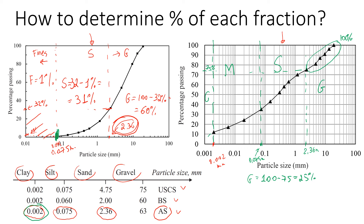For sand, it starts from 75 percent finer and goes down to approximately 35 percent at the boundary between sand and silt. So sand is 75 minus 35, which gives us 40 percent.